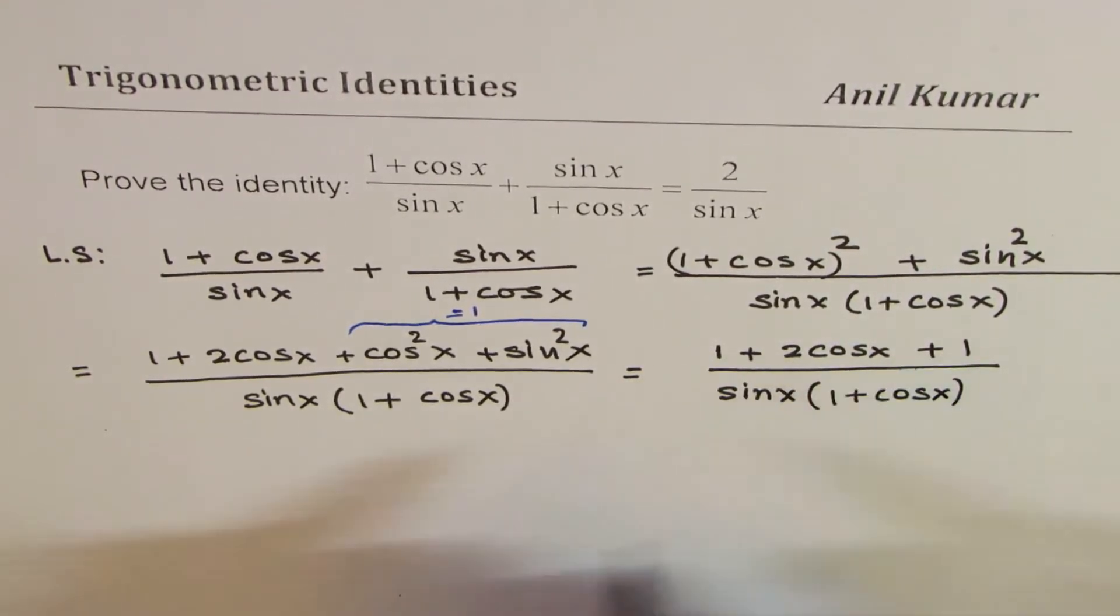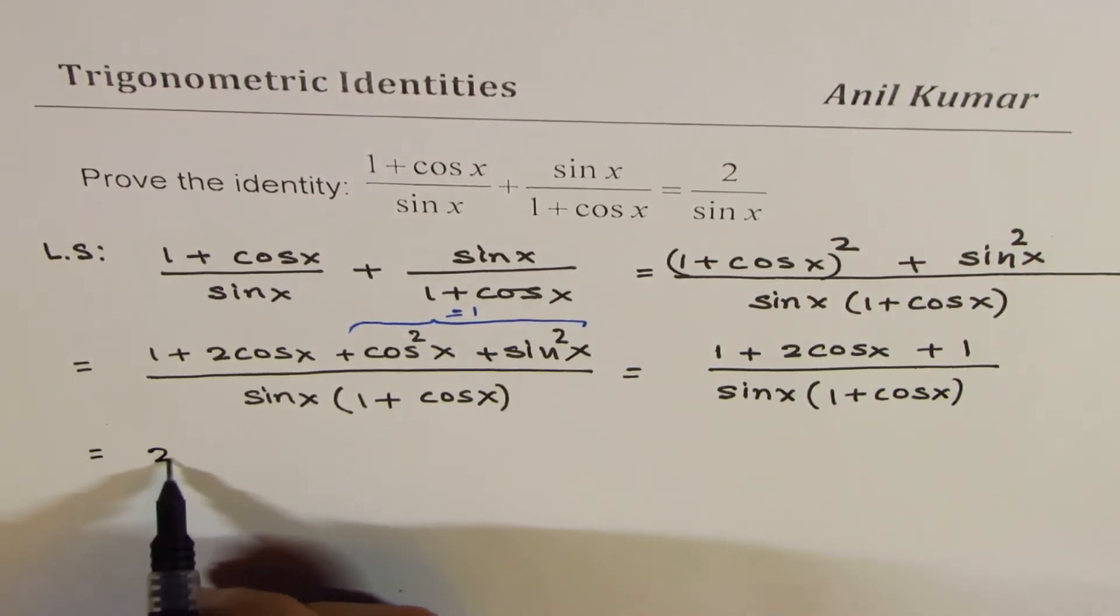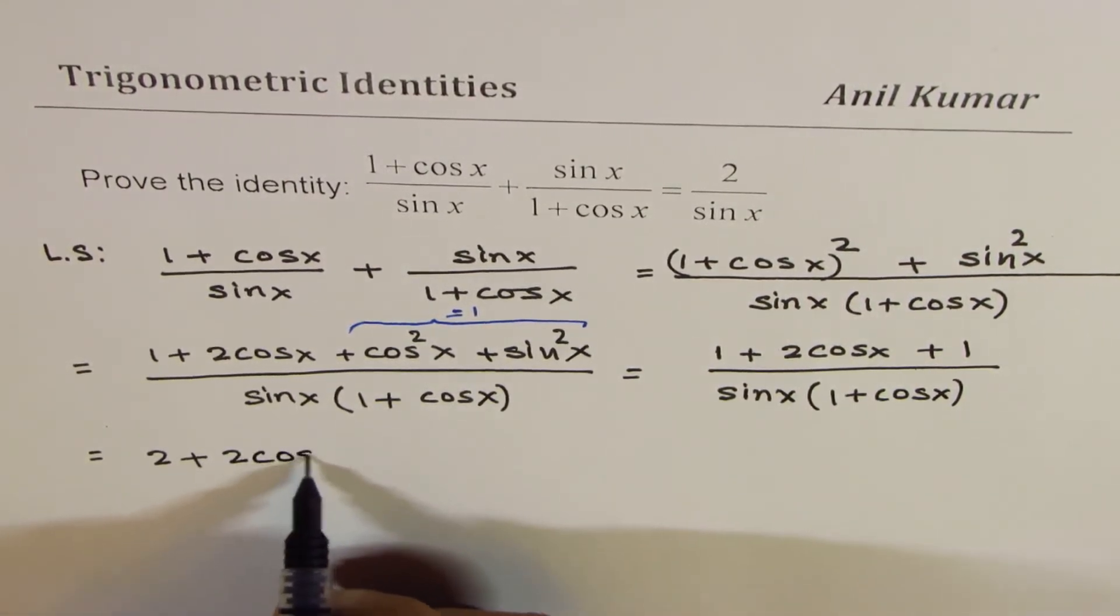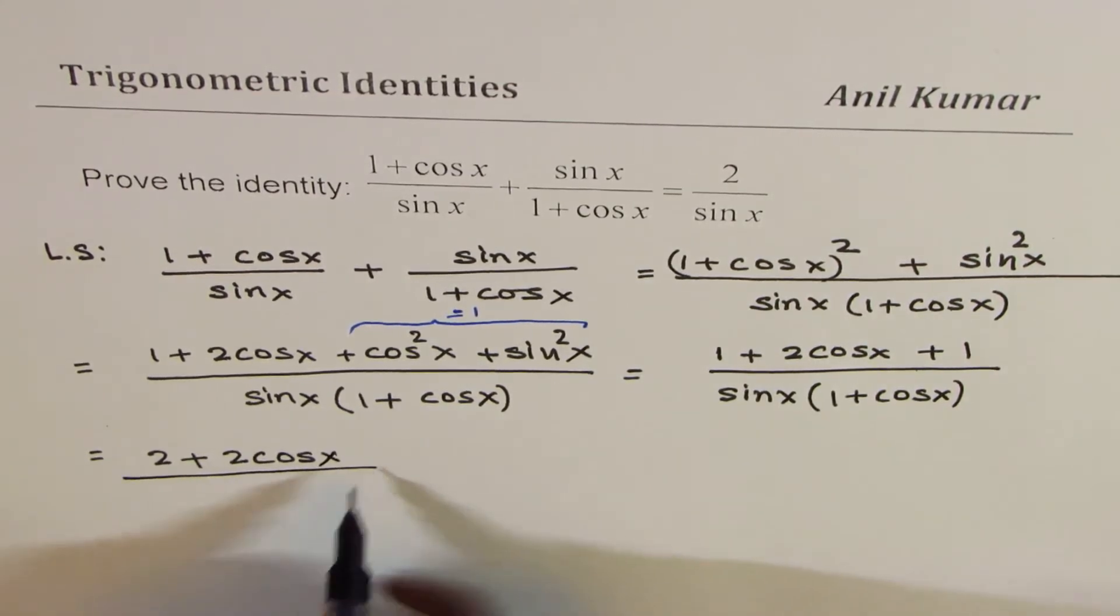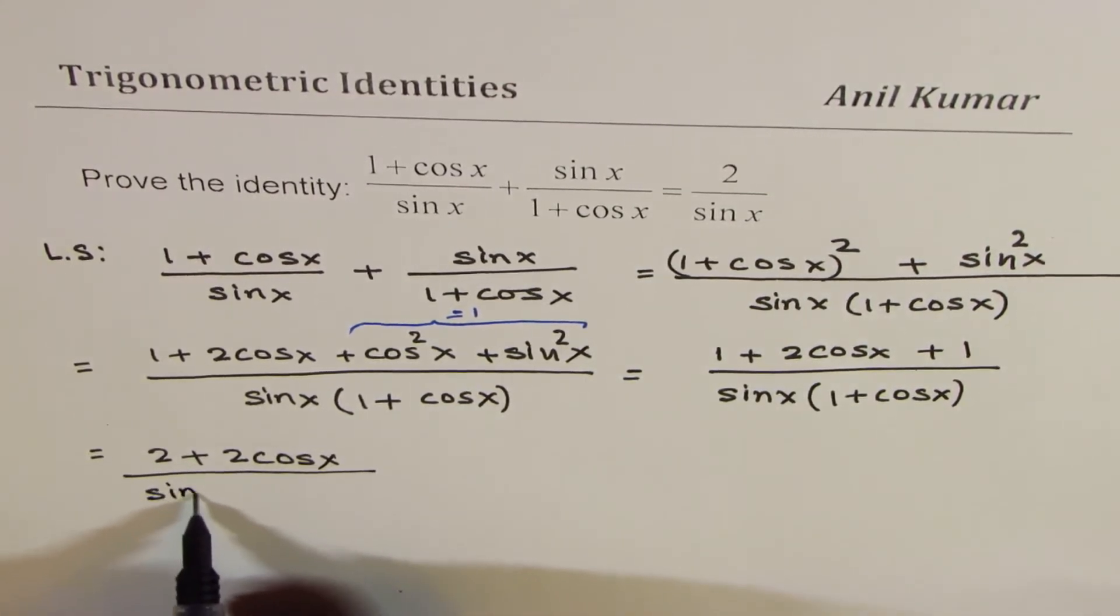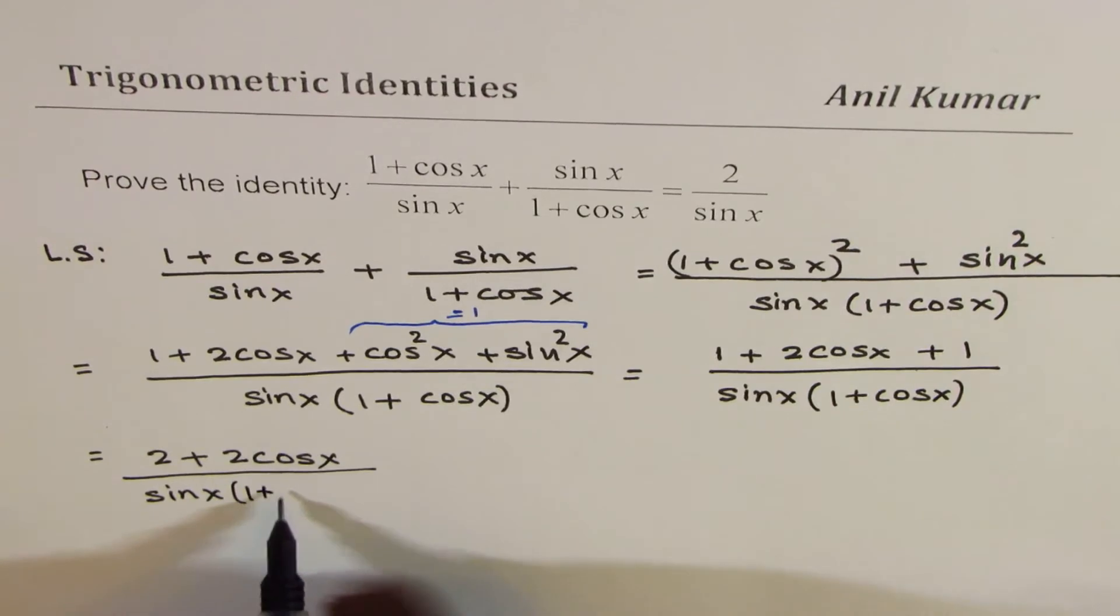Combining these two ones, we get 2 plus 2 cos x divided by sin x times 1 plus cos x.